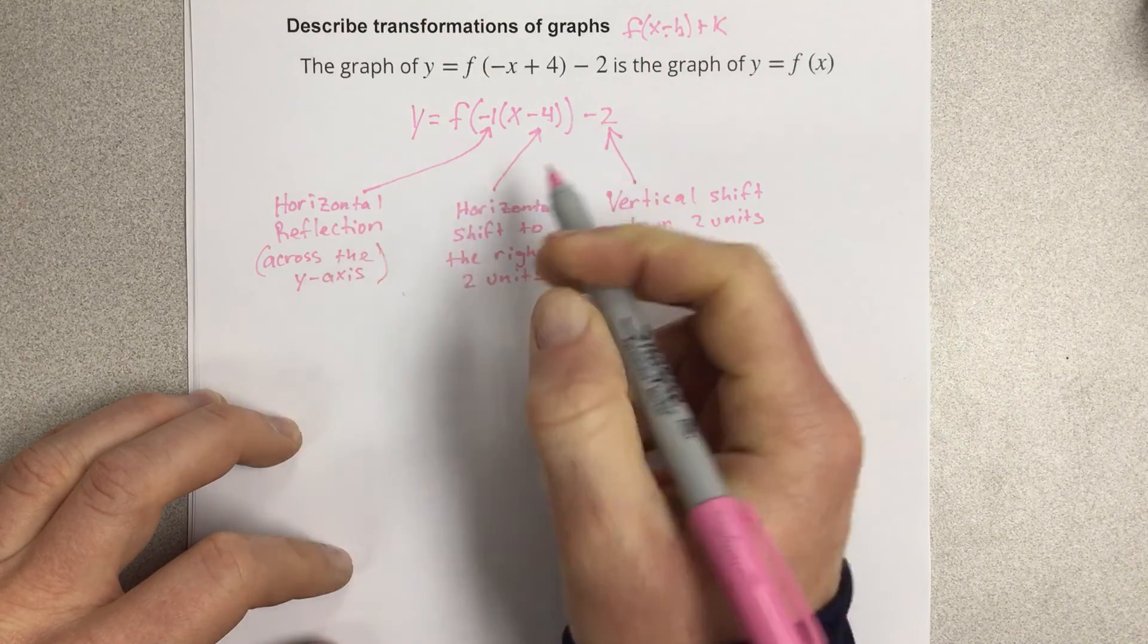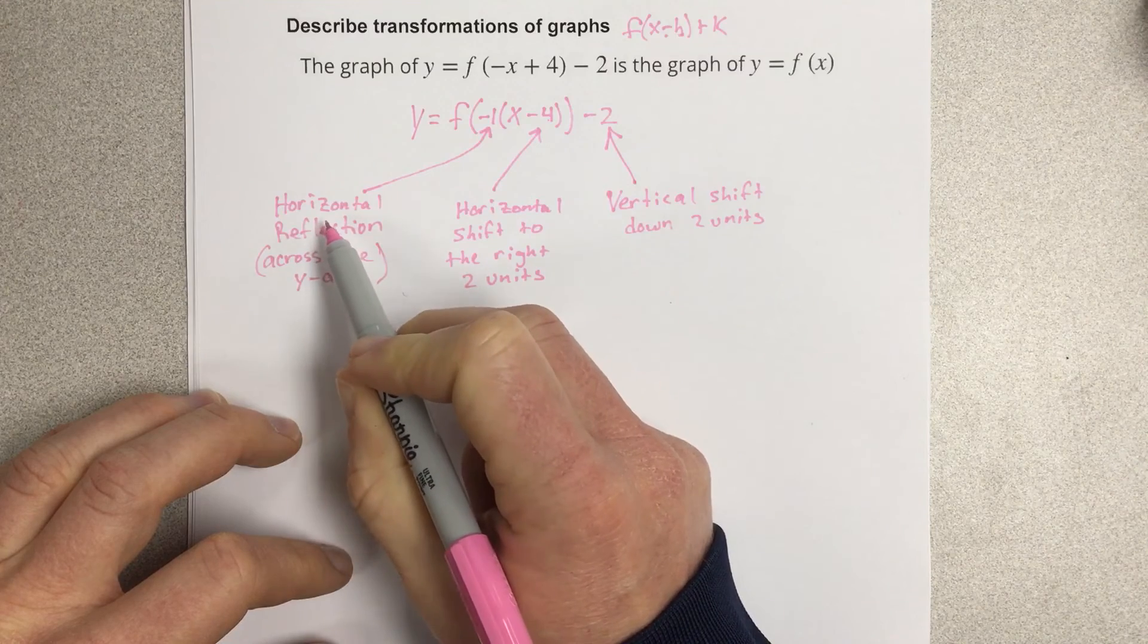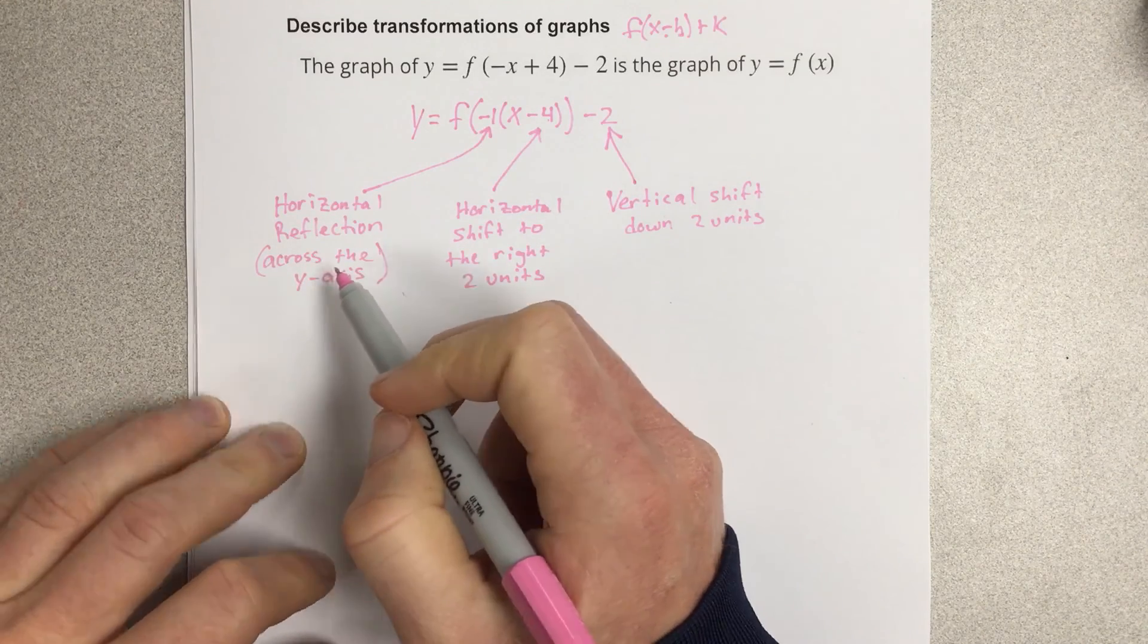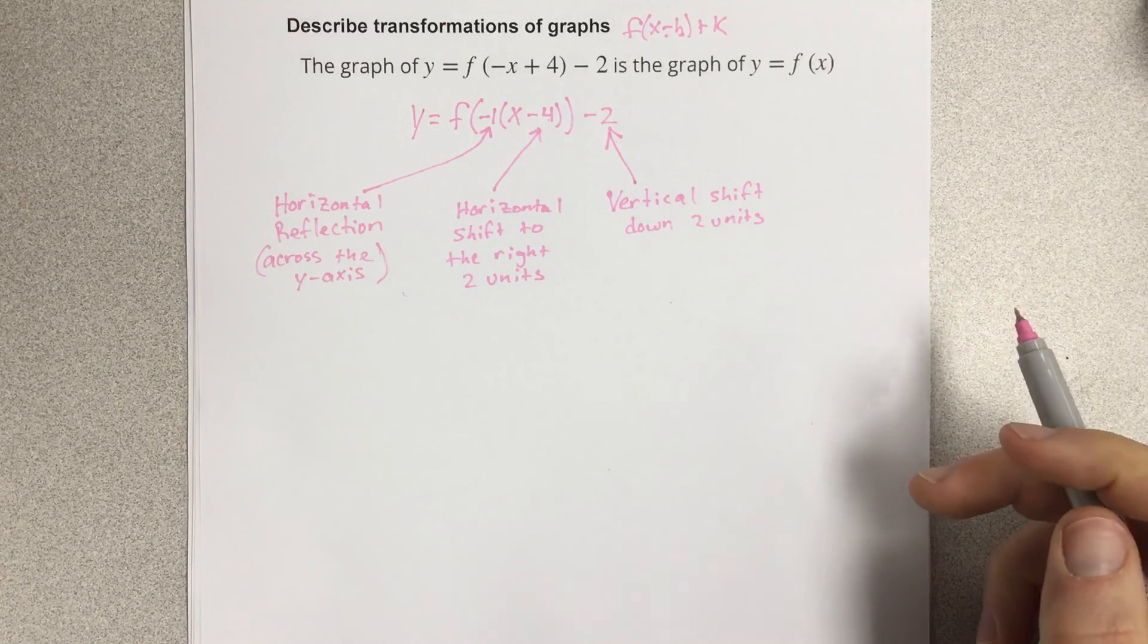Because if we're flopping x values, which is what they're saying, we're flopping x values, that means that we're actually moving across the y-axis.